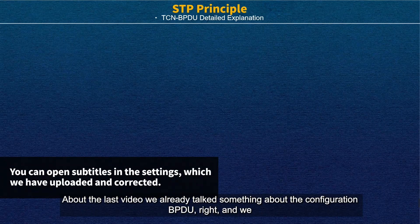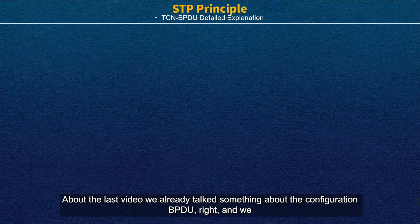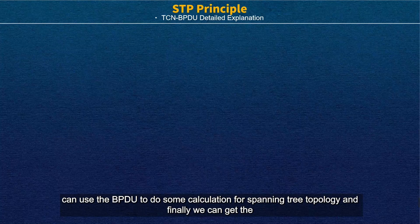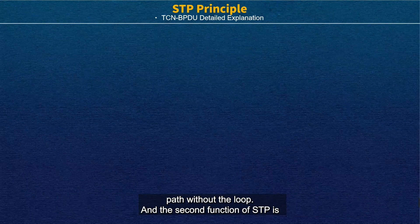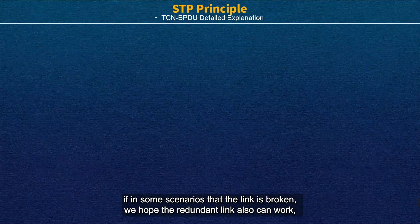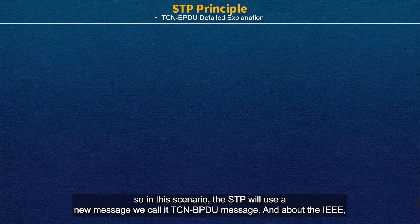In the last video we already talked about the configuration BPDU, and we can use the BPDU to do some calculation for standard tree topology and finally get the path without a loop. The second function of STP is: if a link is broken, we want the redundant link to also work. In this scenario, STP will use a new message called the TCN BPDU.